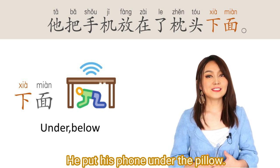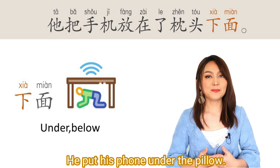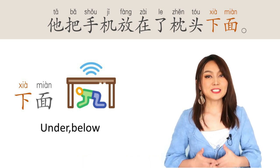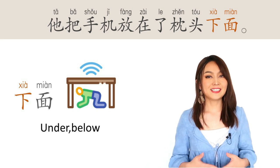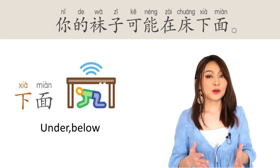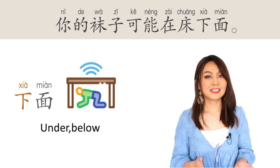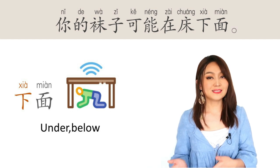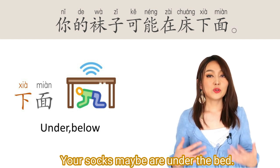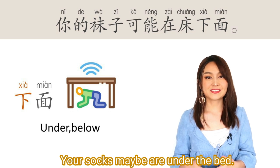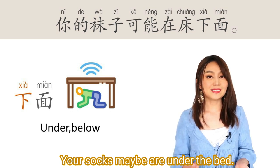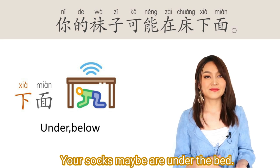下面 — below, under. 下面. For example: 他把手机放在了枕头下面. He put his phone under the pillow. Another sentence: 你的袜子可能在床下面. Your socks may be under the bed.